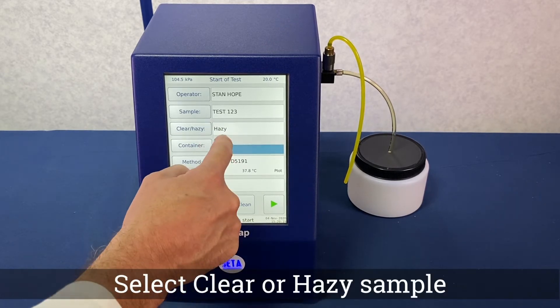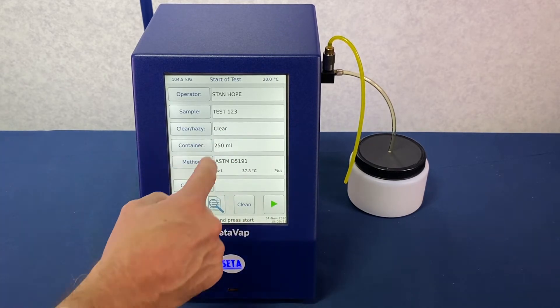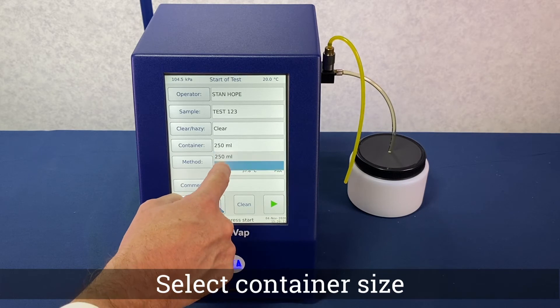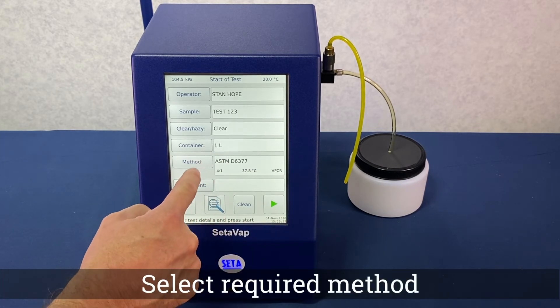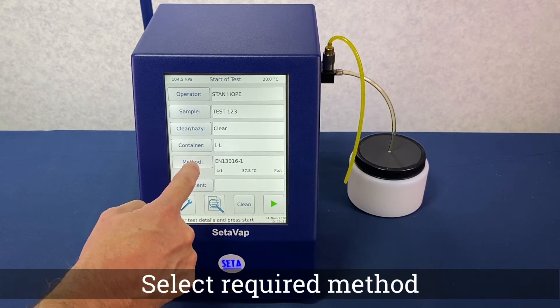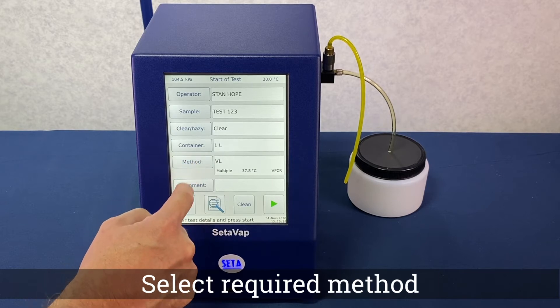Select either clear or hazy sample. Select your container size. Select the required method by either pressing the method button to scroll through the options or by pressing the method field and selecting from the drop-down list of available methods.